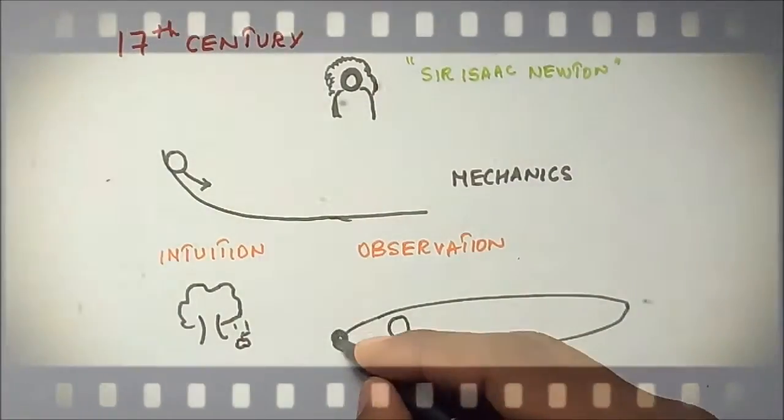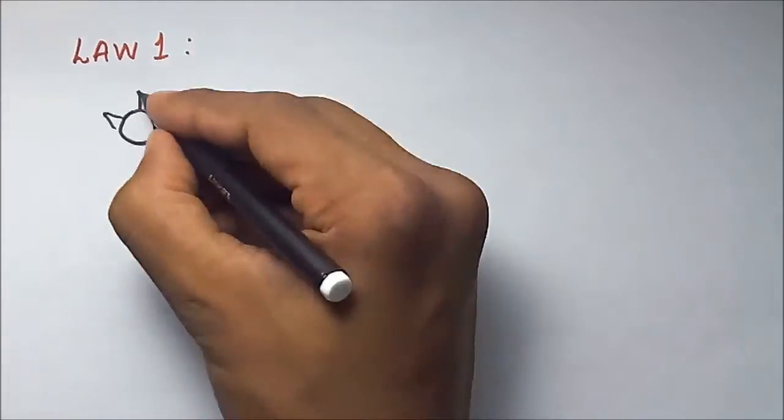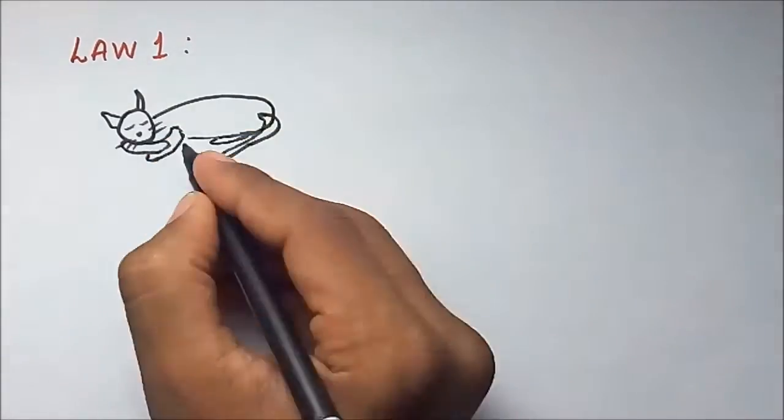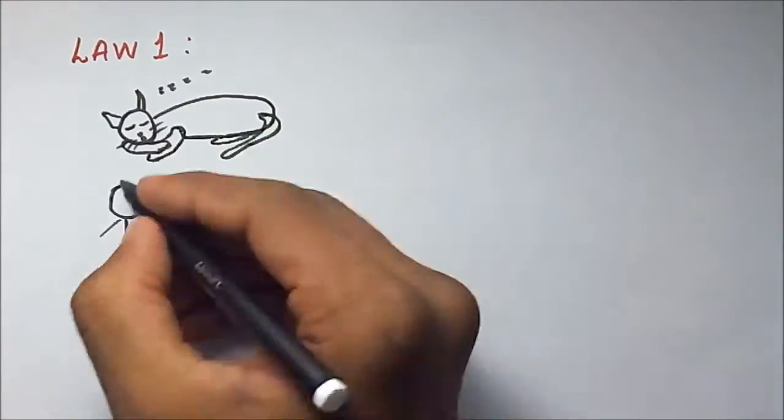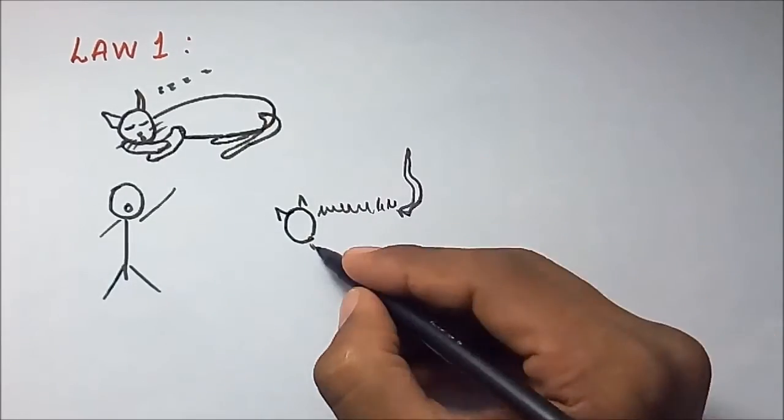His three laws are Law 1. Any object continues to be in a state of rest or uniform motion until and unless an external force acts upon it.